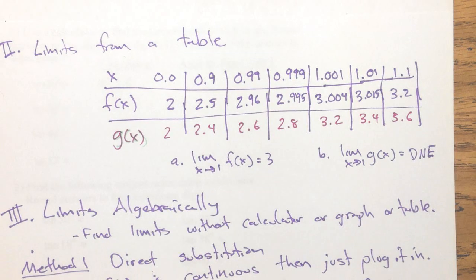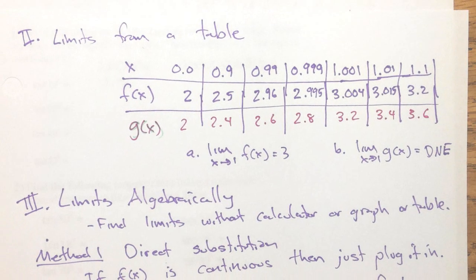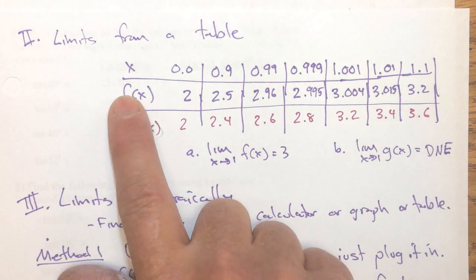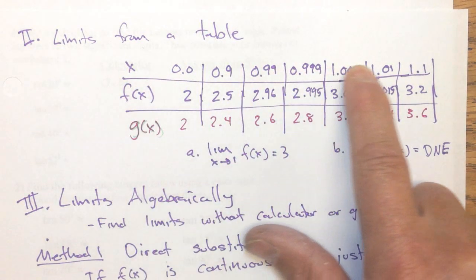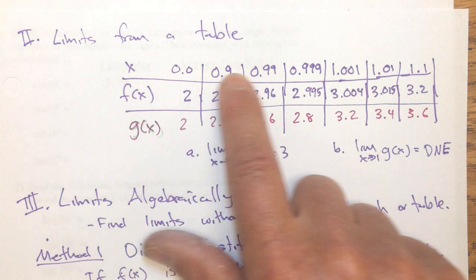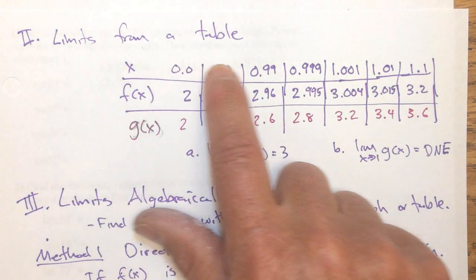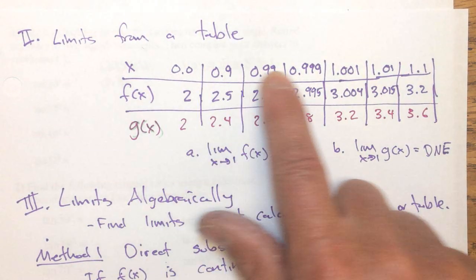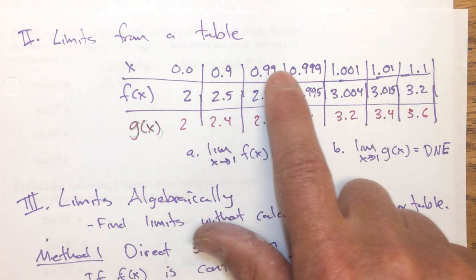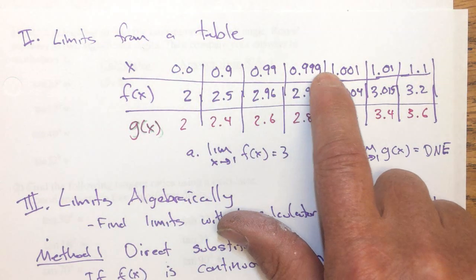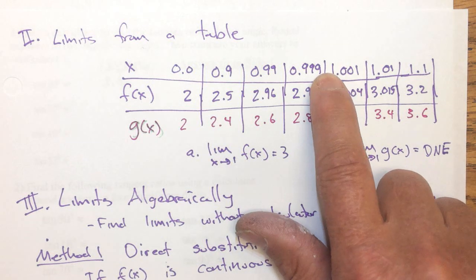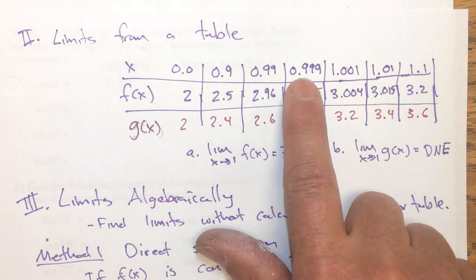Let's take a look at limits from a table. Taking limits from a table are a little bit annoying. You have to just look at the data and see if x is really approaching a specific value. It has to get very, very close to that specific value. So look at x, and it looks like it's right here, approaching one. It's getting very, very close to one. So these are getting closer...